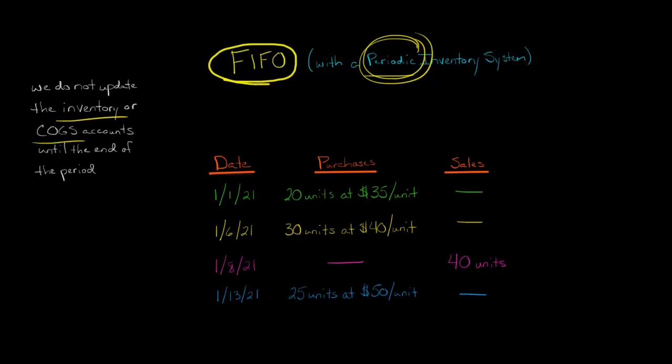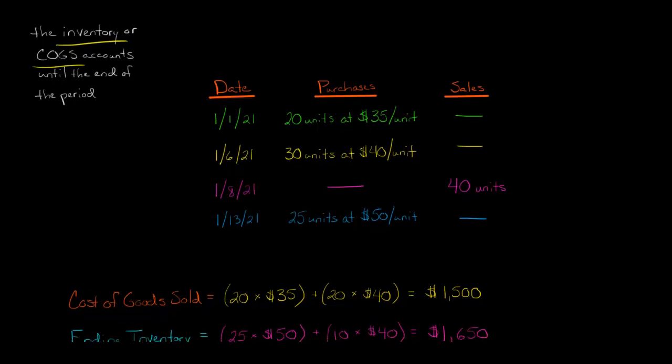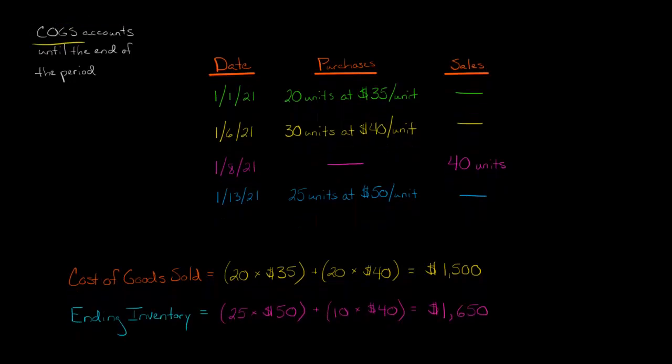Now the question is, how do we calculate cost of goods sold and ending inventory using FIFO? Remember, FIFO means first in, first out. So what we're going to do is wait to the end of the period again.